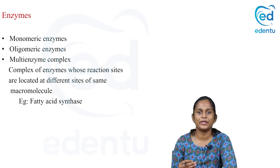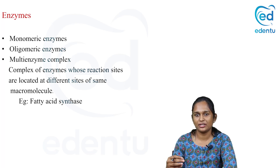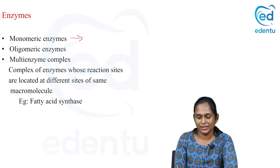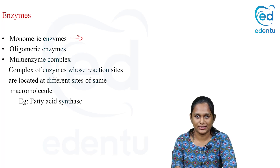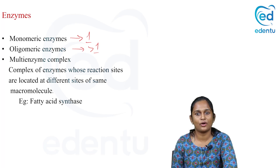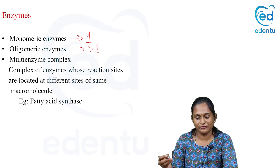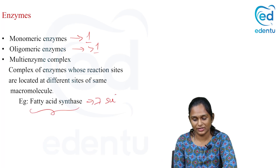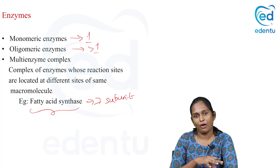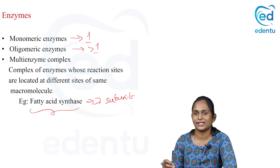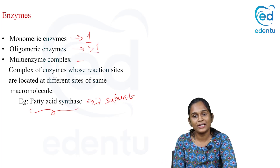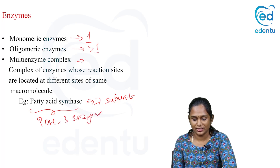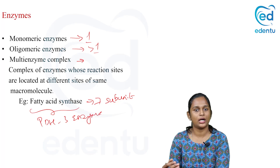How can we classify an enzyme? Since all enzymes are proteins, it can be a single polypeptide chain — that is called a monomeric enzyme. If the enzyme has more than one polypeptide chain, it is called an oligomeric enzyme. A multi-enzyme complex means a complex of enzymes with different reaction sites; for example, fatty acid synthase has seven subunits, each performing a different function. Similarly, pyruvate dehydrogenase has a three-enzyme complex. So enzymes can be monomeric, oligomeric, or a multi-enzyme complex.